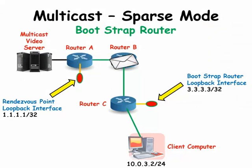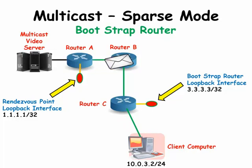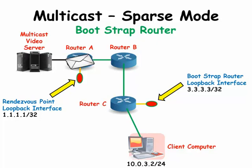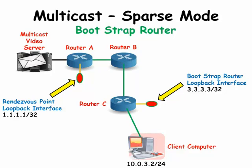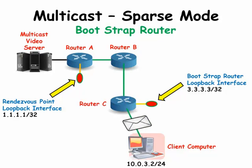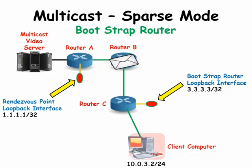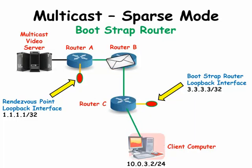We are looking at a simple diagram of a multicast server and a client computer connected together by three routers labeled A, B, and C. We are going to configure the multicast network with these components, making router A the rendezvous point on its loopback interface and router C the bootstrap router on its loopback interface. We have the ability to put the rendezvous point and the bootstrap router on the same router or on separate routers.